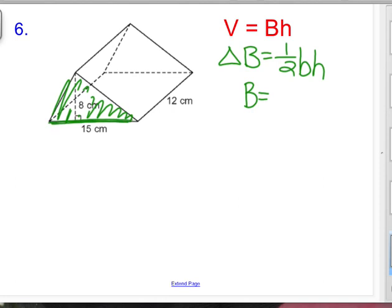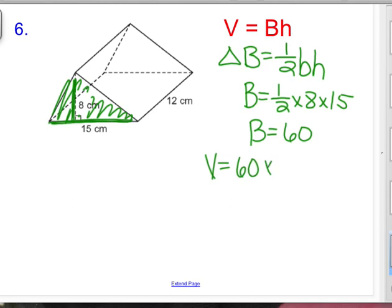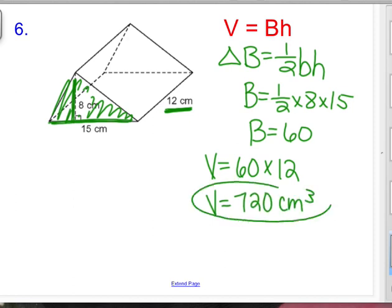So I'm looking here now at this triangle and I see the base is fifteen and the height is eight. So I have to do half times eight times fifteen, and big B ends up being sixty. That's just big B though. Now we have to take that sixty times the height of the overall prism which is 12, and volume equals 720 cubic centimeters. Awesome.